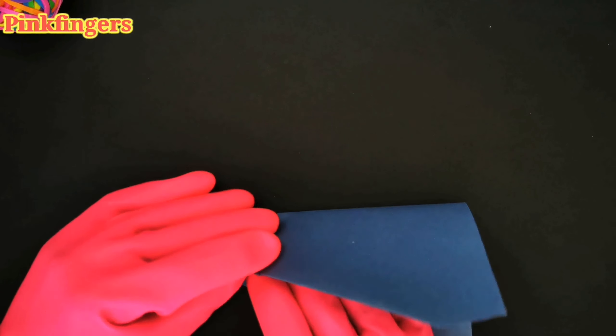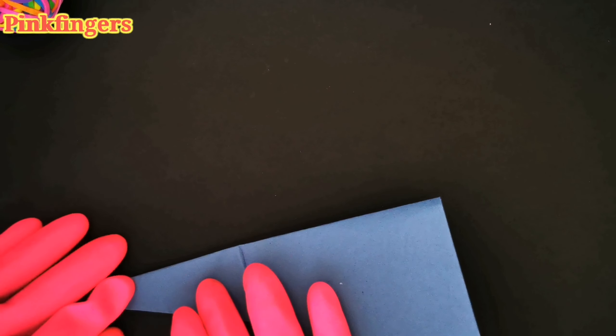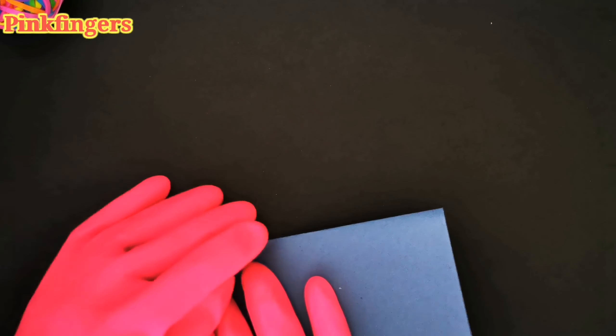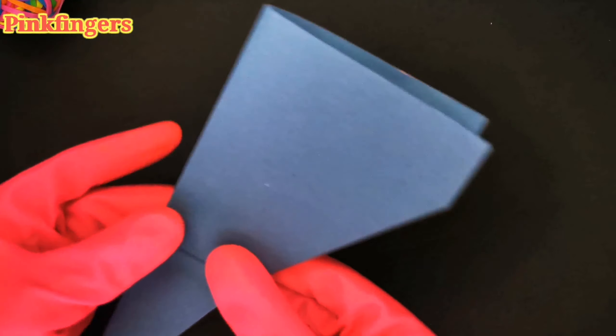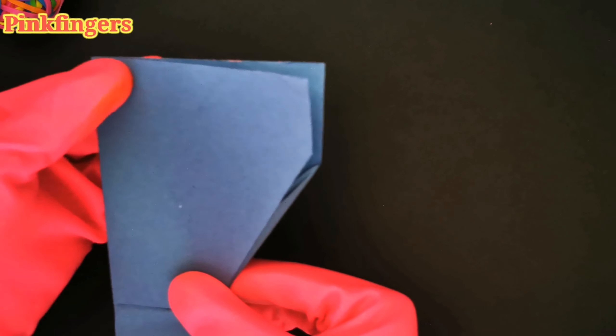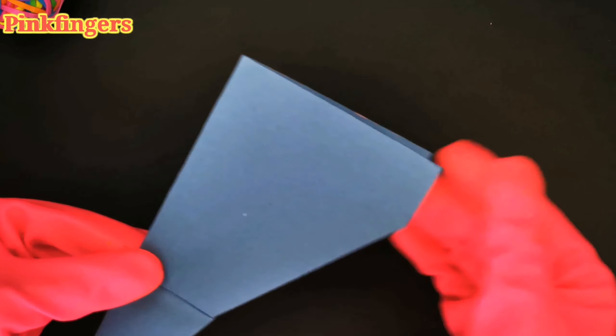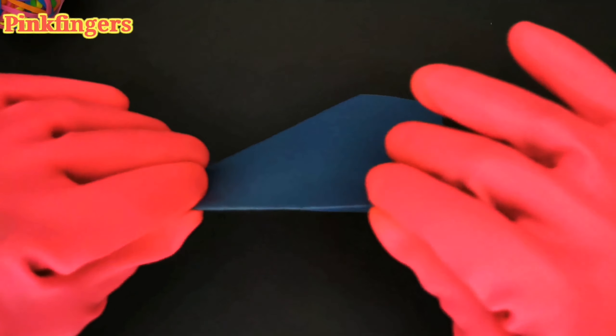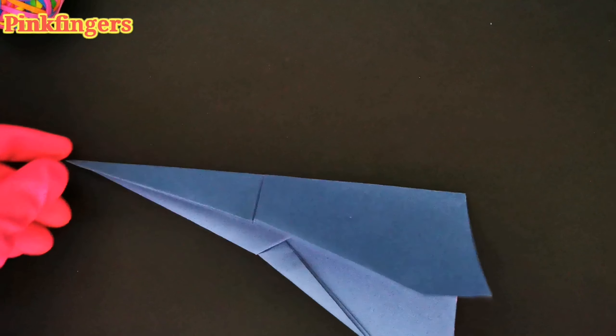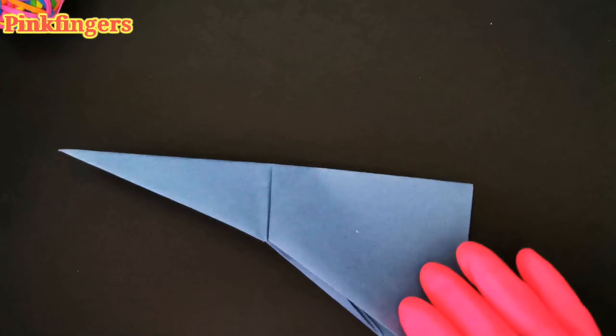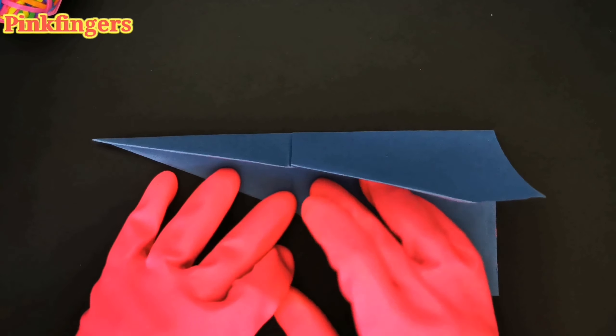Now we fold it like a book. If you have all those measurements done correctly, it shouldn't be a problem. It should close very easily. As you can see, now I'm just pressing down those edges, making a sharp crease, because the crease is the key thing guys. That's what makes the plane actually fly and glide through the air.